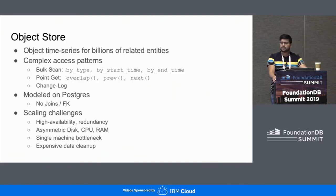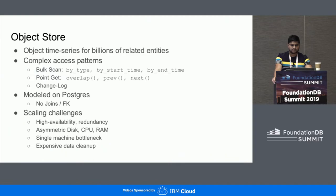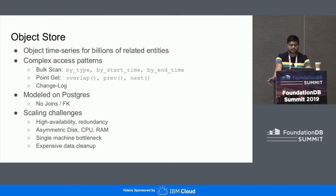The layer that stores this configuration graph is called the object store. It maintains a time series of state changes for every object in a data center, and there could be large numbers of such objects like virtual machines, access rules, ports, routes, and network flows. Different use cases access this layer in different ways — some doing bulk scans using specific attributes like object type, version start, and end time, while others want fast point access.